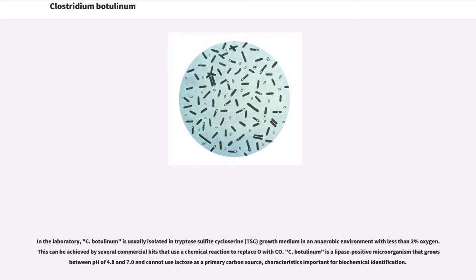In the laboratory, C. botulinum is usually isolated in tryptose sulfate cycloserine growth medium in an anaerobic environment with less than 2% oxygen. This can be achieved by several commercial kits that use a chemical reaction to replace oxygen with carbon dioxide. C. botulinum is a lipase positive microorganism that grows between pH of 4.8 and 7.0 and cannot use lactose as a primary carbon source, characteristics important for biochemical identification.